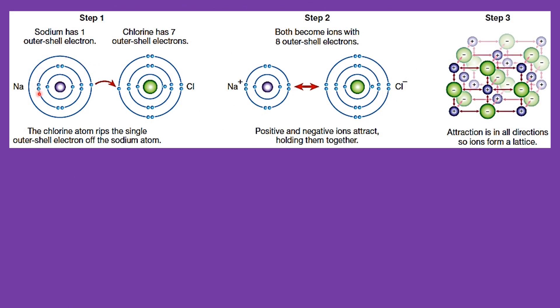Based on the illustration, sodium, a kind of metal, transfers its valence electron — which is 1 — to chlorine, a kind of non-metal with 7 outer shell electrons.